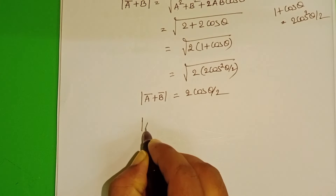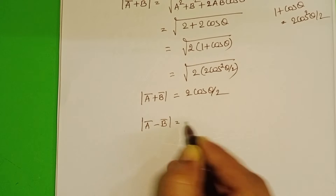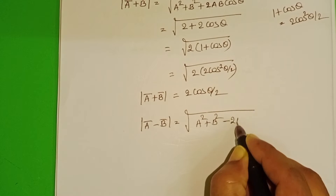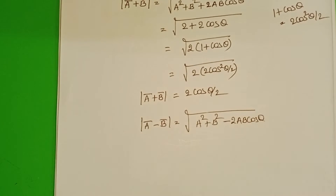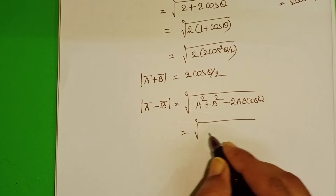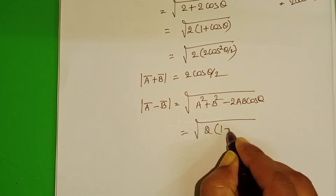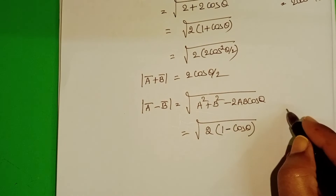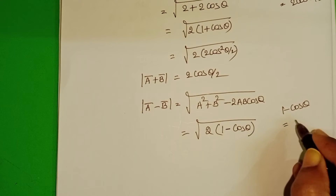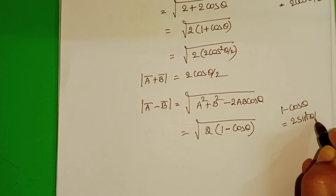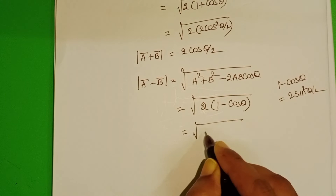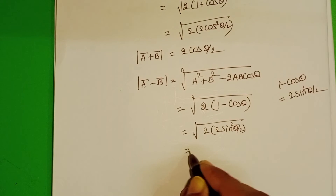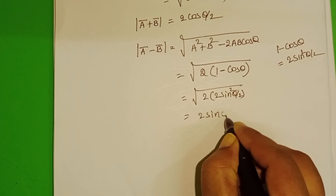Now find the magnitude of the difference of the given two unit vectors: square root of a squared plus b squared minus 2ab cos theta. Here also the magnitude gives square root of 2 into (1 minus cos theta). Since 1 minus cos theta equals 2 sin squared (theta/2), we get square root of 2 into 2 sin squared (theta/2), which becomes 2 sin(theta/2).